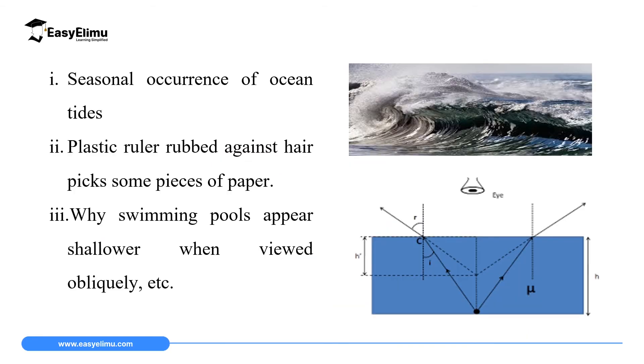Another phenomenon that physics is going to explain is seasonal occurrence of ocean tides. You can see we have displayed the ocean tides in the photo, call it photo 3. So we are going to explain why ocean tides occur. Another phenomenon that physics is going to explain is why a plastic ruler, rubbed against hair, picks some piece of paper. I remember when I was in primary school class 6, we were doing what we call electrostatic charges, and our teacher told us to rub a ruler against our hair and then it was picking some piece of paper. That is magic, and that's what we call phenomena. Now we are going to see what happens so that that ruler can pick some piece of paper.